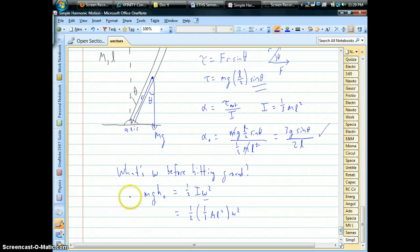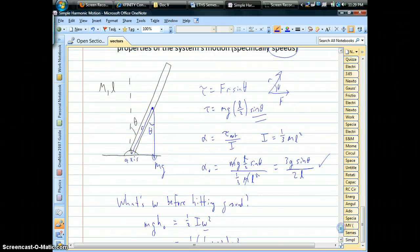So you can plug in the one-third mL squared. Now on the left-hand side, we have to figure out what the height is. When you're dealing with real objects, so-called rigid bodies like this, in rotations problems, heights, okay, to find the potential energy, we have to use the location of the center of mass. So in this case, our initial height would be this in red. How high is the center of mass of the object above the ground?